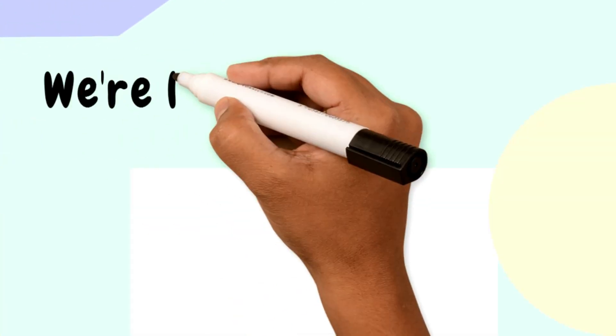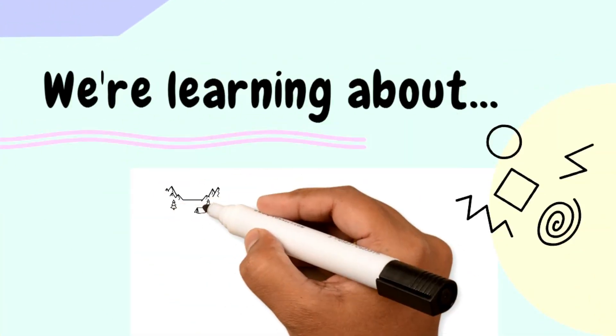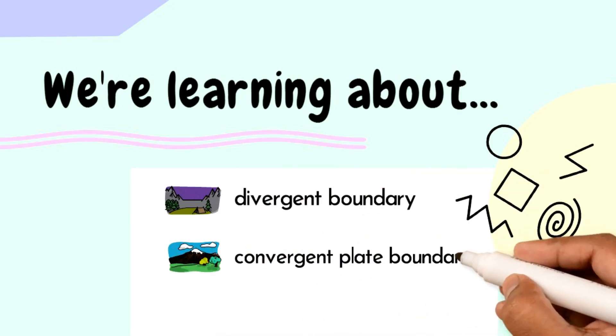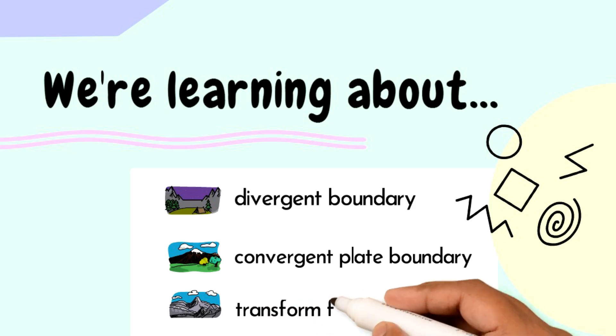Today, we're learning about three things. First, divergent boundary. Second, convergent plate boundary. And third, transform fault boundary.